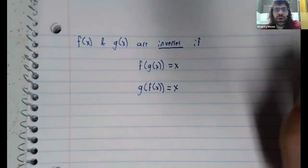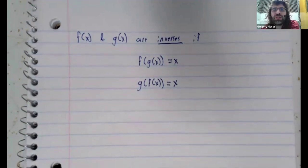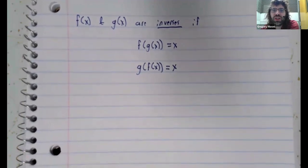That is, when you compose the two functions, the functions both go away, they mutually annihilate and leave you with just the variable.